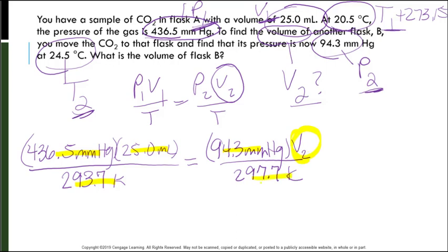So since we're dealing with fractions again, and I don't like looking at fractions, I want to make it a linear problem. So I'm going to multiply diagonally. So 436.5 times 25 times 297.7. Let's see what that gives us. It's okay if it's a really big number. I got 3,248,651.25.